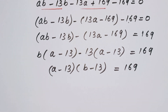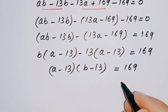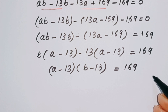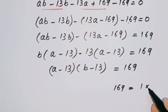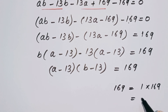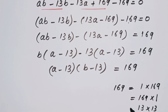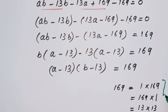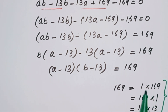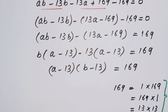Now we have to factorize 169. We can write 169 as 1 multiplied by 169, or 169 times 1, or 13 times 13. So we have three cases to deal with.